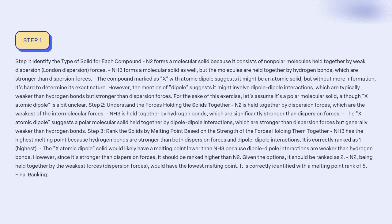Given the options, X should be ranked as 2. N2, being held together by the weakest forces — dispersion forces — would have the lowest melting point, and is correctly identified with a melting point rank of 5.